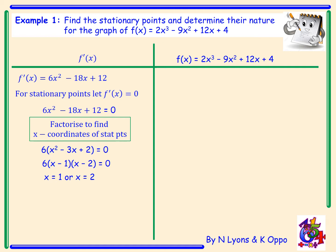We now need to investigate whether these points are maximum, minimum, or points of inflection. To do this we find our second derivative. We differentiate 6x squared minus 18x plus 12 again to give 12x minus 18. To find the nature when x equals 1, we substitute into the second derivative and get negative 6, which tells us we have a maximum turning point.